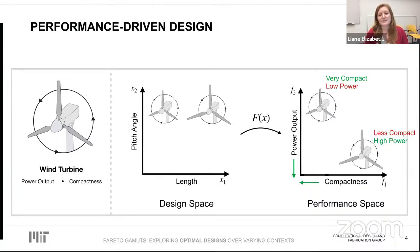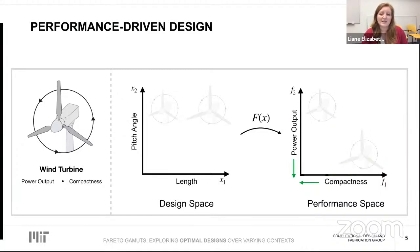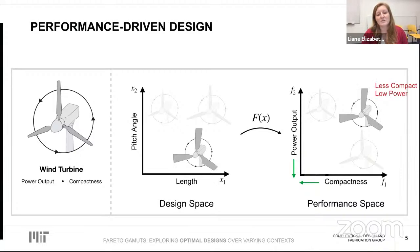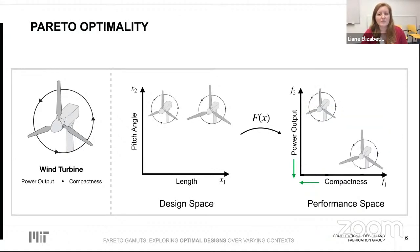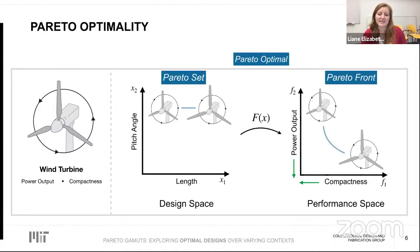We always assume that performance metrics have been formulated for minimization, so the most desirable designs map near the origin or along one of the axes. This visualization lets us identify designs that are not optimal — like one that offers strictly worse power output for the same compactness score. After removing these dominated designs, we're left with the Pareto optimal points. The designs themselves form the Pareto set, and their image in performance space yields the Pareto front. These Pareto fronts allow engineers to understand achievable performance tradeoffs, then select a design based on their needs.